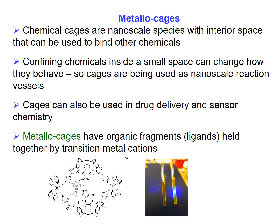The topic is metallocages. A cage — a chemical cage like any other type of cage — is something where the outside defines an interior space. And like any other cage, if you have an interior space, you can put something on the inside. A chemical inside a cage does not necessarily behave in the same way as it would out in free solution, so this can be used to manipulate the chemistry of things.